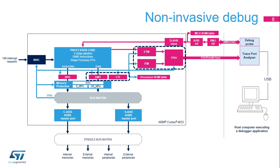Non-invasive debug aims to track what happens in the processor without affecting its performance. It is based on real-time trace. The ETM and ITM modules have the capability of synthesizing trace packets and issuing them over the AMBA trace bus, or ATB. The TPIU receives the trace packets and outputs them over an external interface, so that the trace port analyzer, or TPA, can capture them.